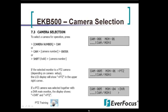To pull up camera selections, you can hit the camera number and then the cam button, hit the cam button then the camera number and enter, or hold the shift key and hit the camera number. If you selected the monitor as a PTZ camera, it will display 'PTZ.' If the monitor and camera are both set up correctly, it displays both 'DVR' and 'PTZ,' letting you know you're controlling both a DVR and a PTZ simultaneously.